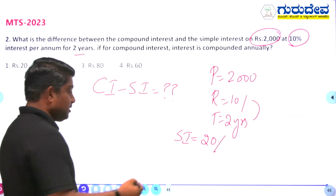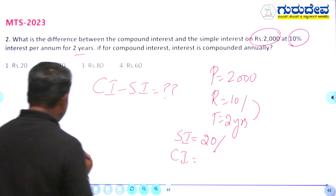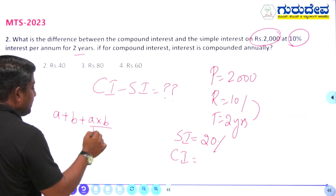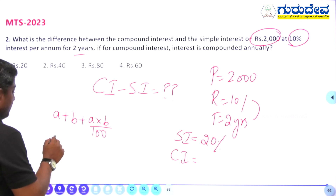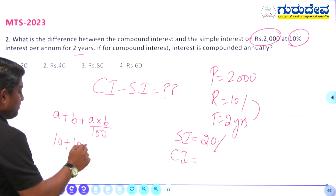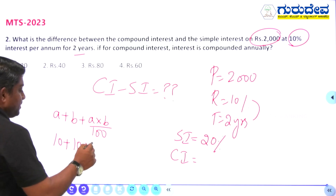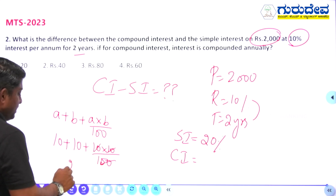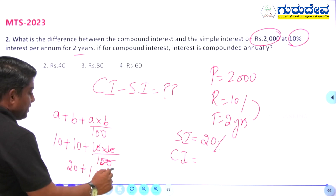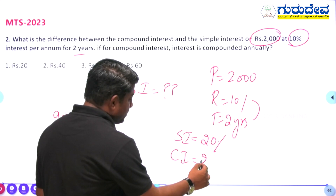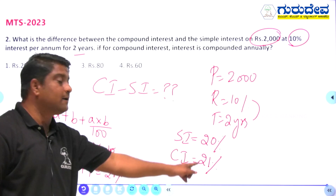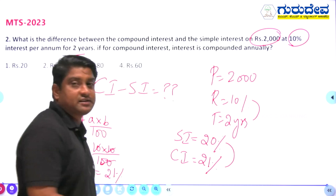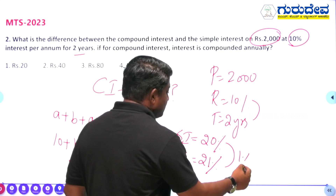For compound interest, use the formula: a + b + (a × b)/100, where a = 10 and b = 10. So: 10 + 10 + (10 × 10)/100 = 20 + 1 = 21 percent. The compound interest is 21 percent and the simple interest is 20 percent, so the difference is 1 percent.